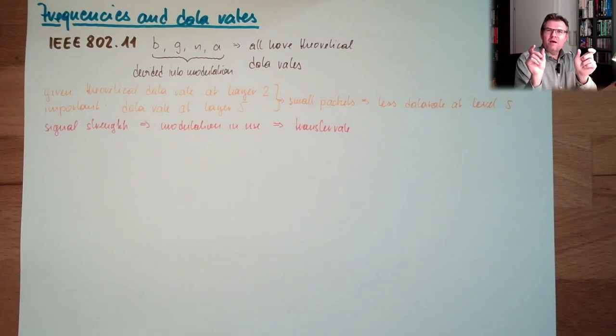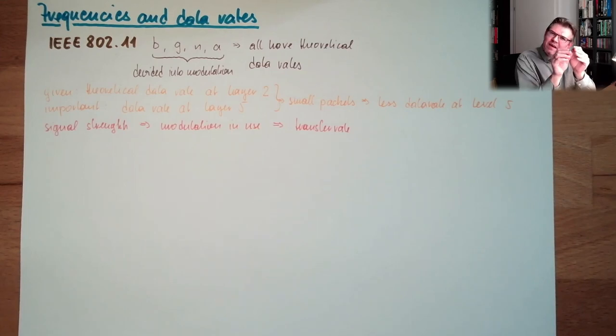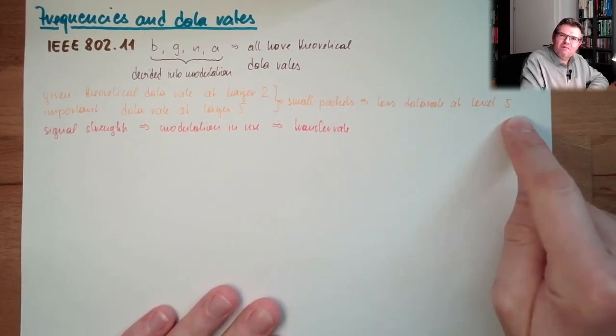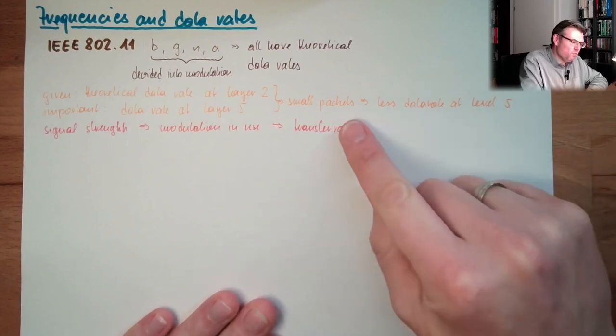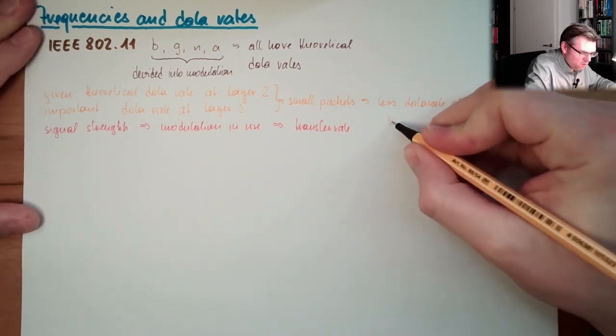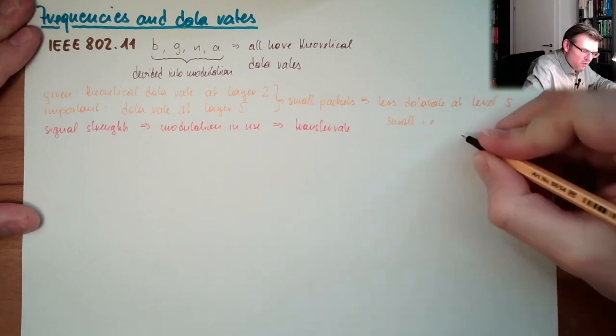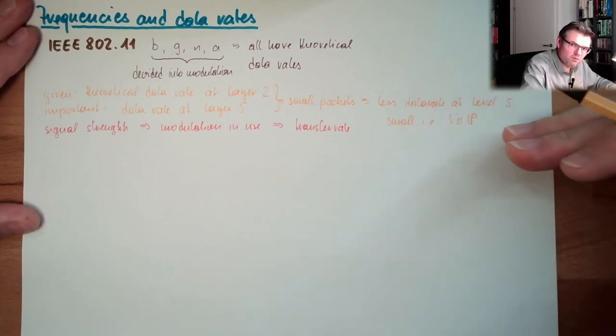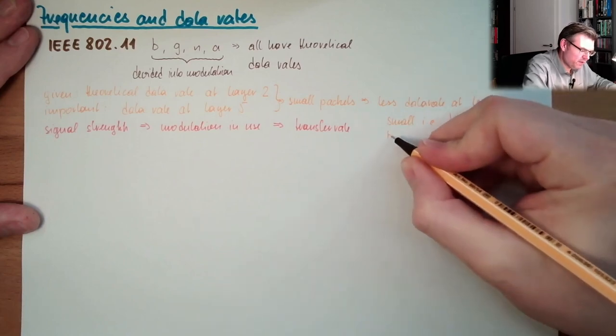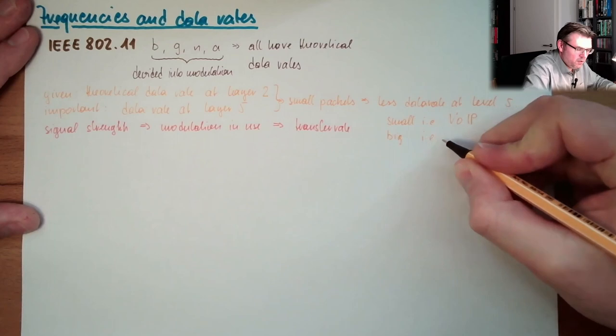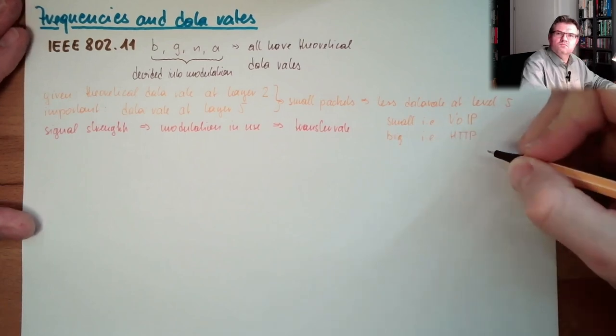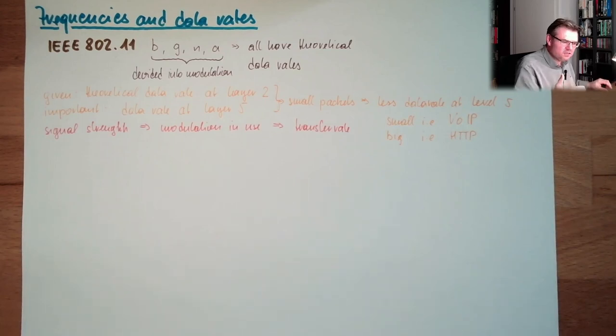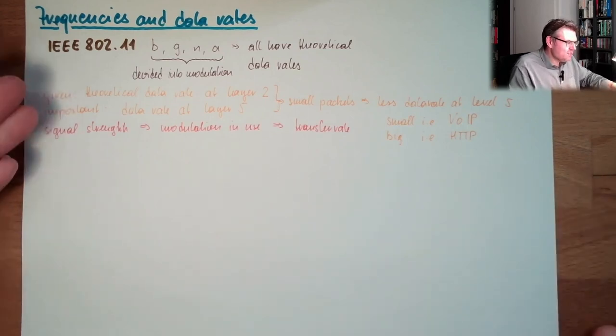I have one time the protocol overheads from the sub-layers. If I'm using tiny packets, I have a lot of the protocol overhead of the sub-layers. So the smaller the packets, the less the data rate at level five. What is small packets? An example is typical voice over IP application, telephone, internet telephone. Big packets: an example is HTTP transfer, downloading files. This has all influence.